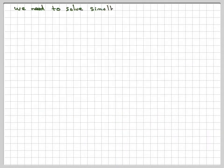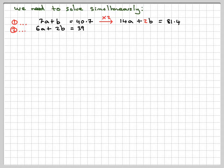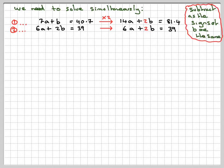Now we solve these simultaneously. Multiplying the first equation by 2 to get the B's the same: 14A + 2B = 81.4. The second equation stays 6A + 2B = 39. Subtracting, since the signs are the same: 14A minus 6A gives 8A, and 81.4 minus 39 gives 42.4. Dividing both sides by 8 gives A = 5.3.